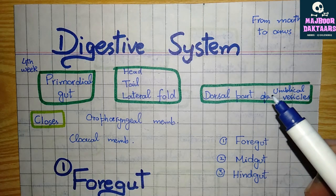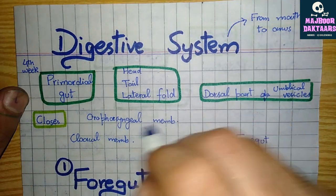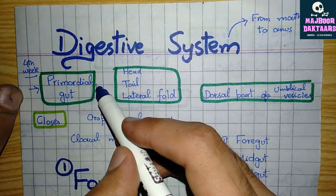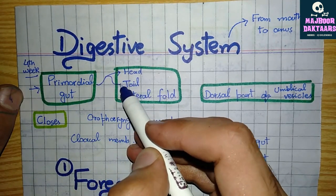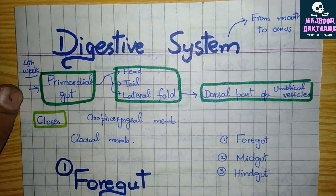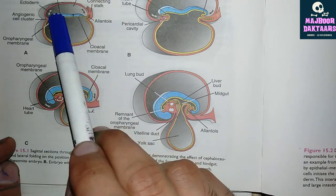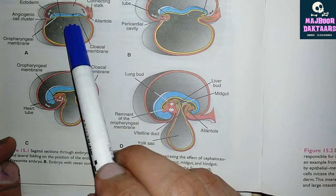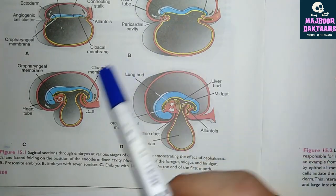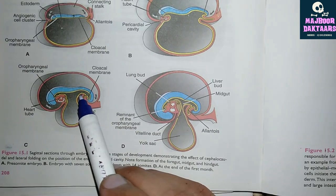The digestive system consists of a tract which extends from mouth to anus. Digestive system development starts as the primordial gut during the fourth week of development. The primordial gut consists of a head, a tail, and a lateral fold, which is formed by the invagination of the dorsal part of the umbilical vesicle. When the embryonic plate undergoes craniocaudal and lateral folding, the part of the umbilical vesicle is incorporated inside it as the primordial digestive tract.